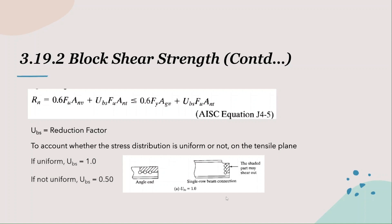This covers the majority of possibilities. But if we have coped beams with two rows of bolts, the stress distribution is not uniform because the row of bolts towards the end of the beam takes a larger proportion of shear load than the one further away. We will now solve three examples which will clear out our understanding about block shear.